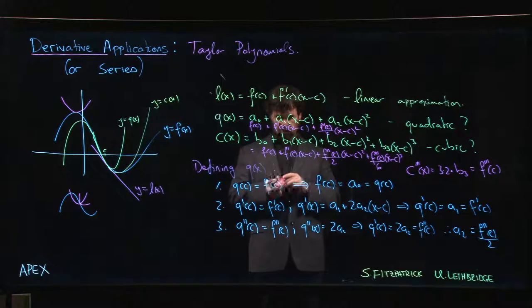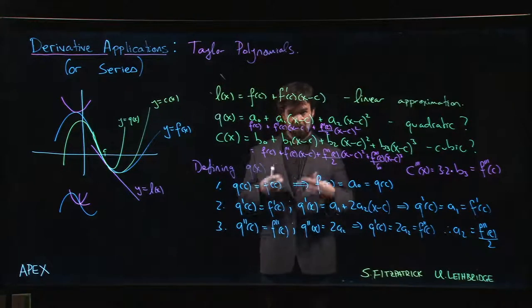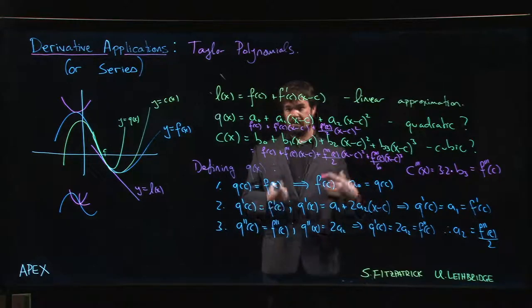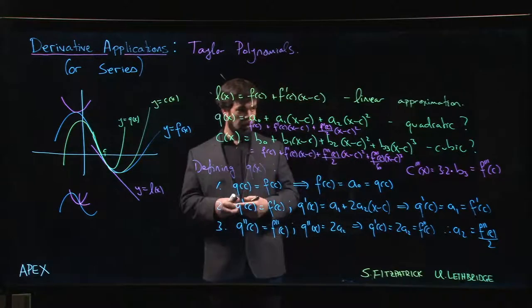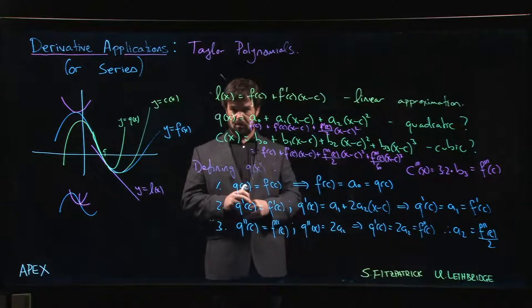Okay, and then you get the cubic approximation. And from here you start thinking, you try to figure out what's the pattern, where is this going to go from here. Once you figure out what the pattern is, you can write down this general formula for what are called Taylor polynomials, and we'll do that in the next video.